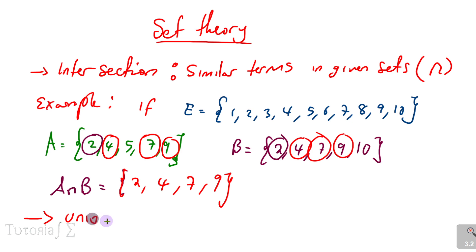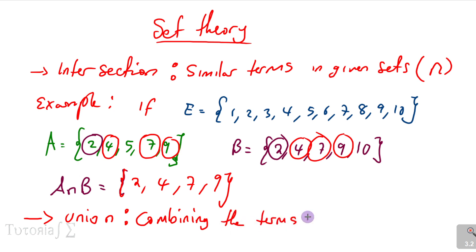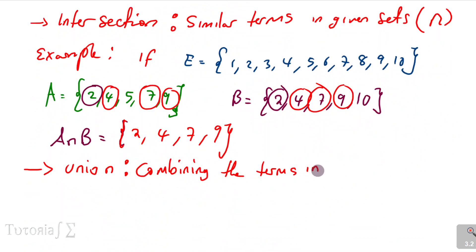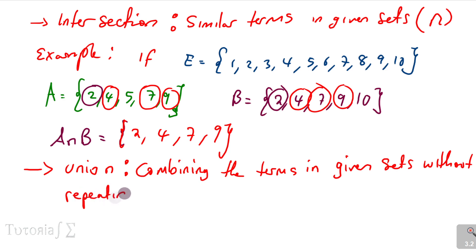Moving on from intersection, we go to union. Union means combining all the terms in the given sets without repeating common elements.